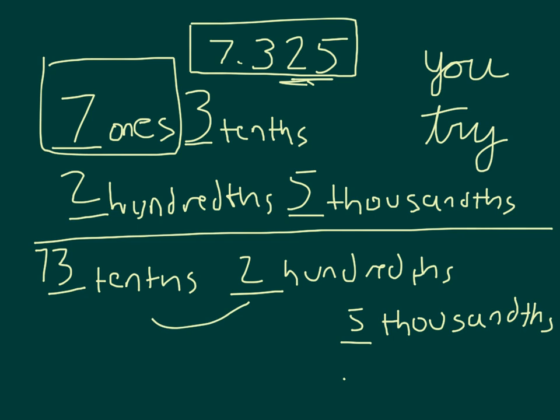We could still break it down into hundredths even. Those 73 tenths being worth 730 hundredths, so we would have 732 hundredths and five thousandths together with five thousandths. There are so many different ways that we can break apart this number and by decomposing this number in this fashion it will help us with our later work.